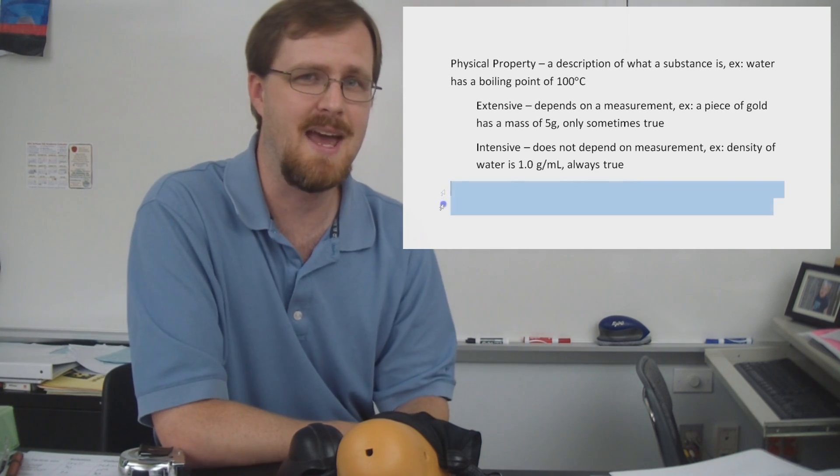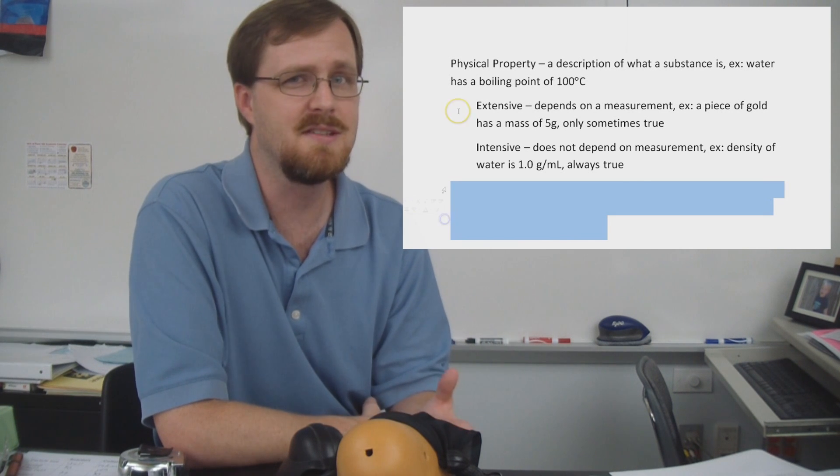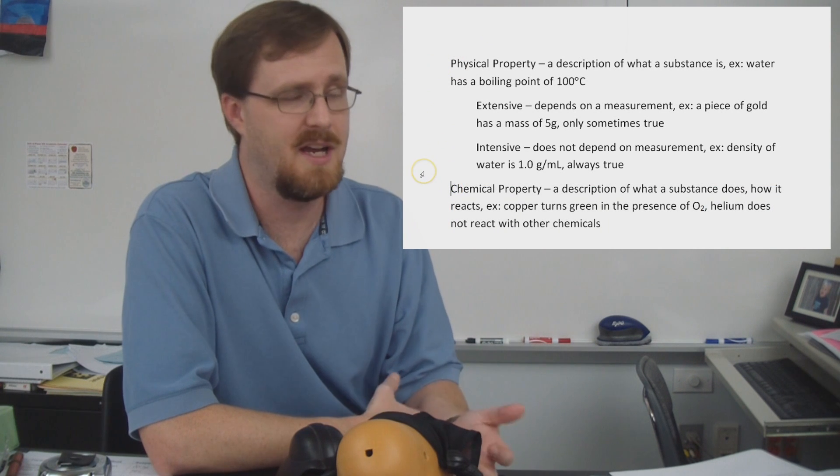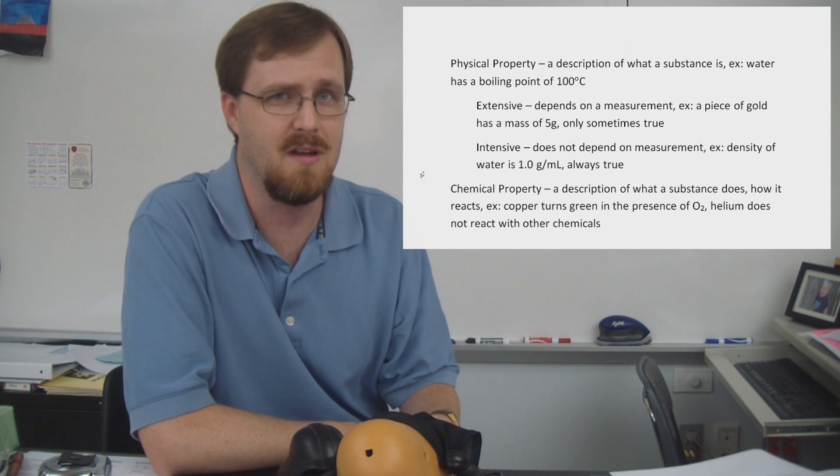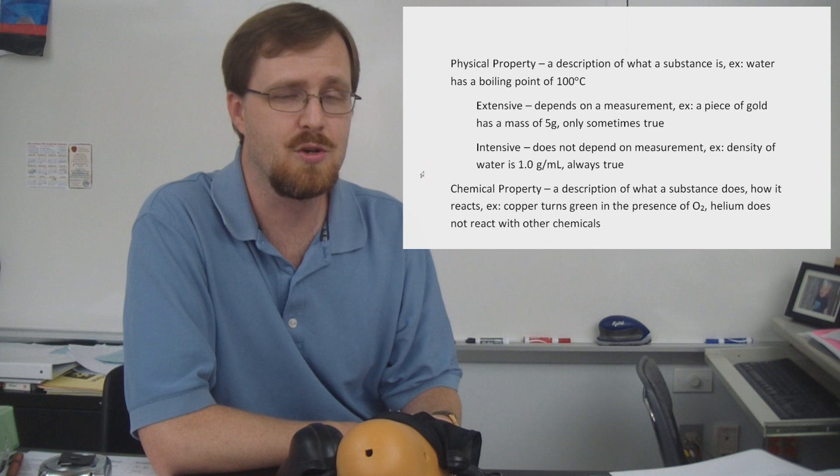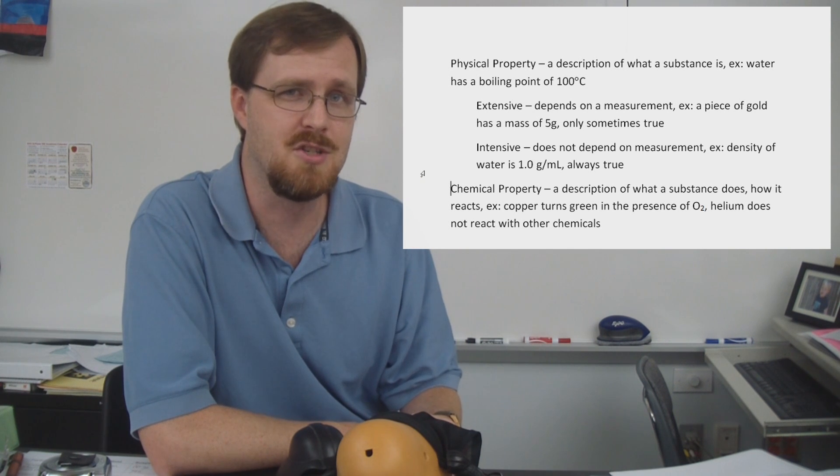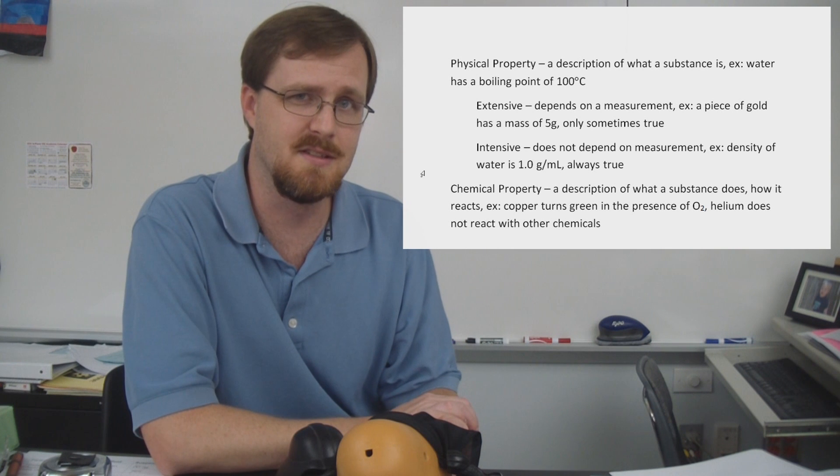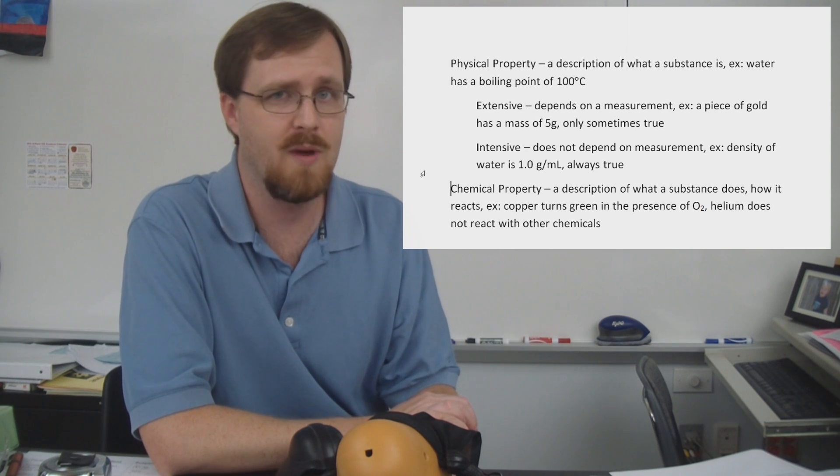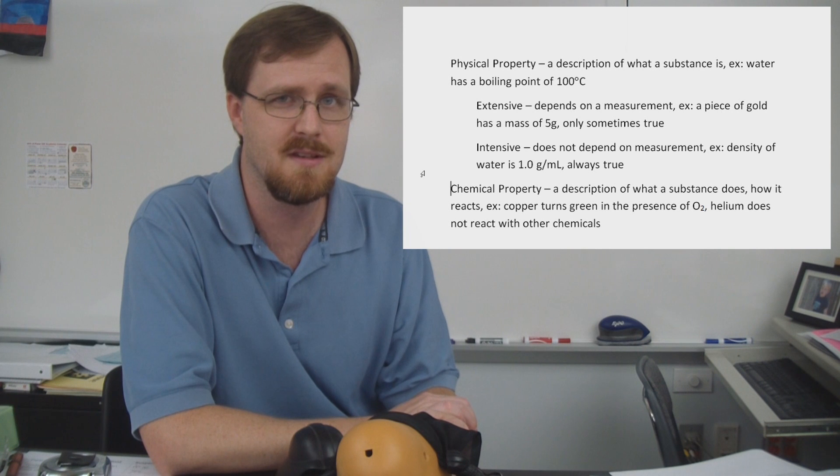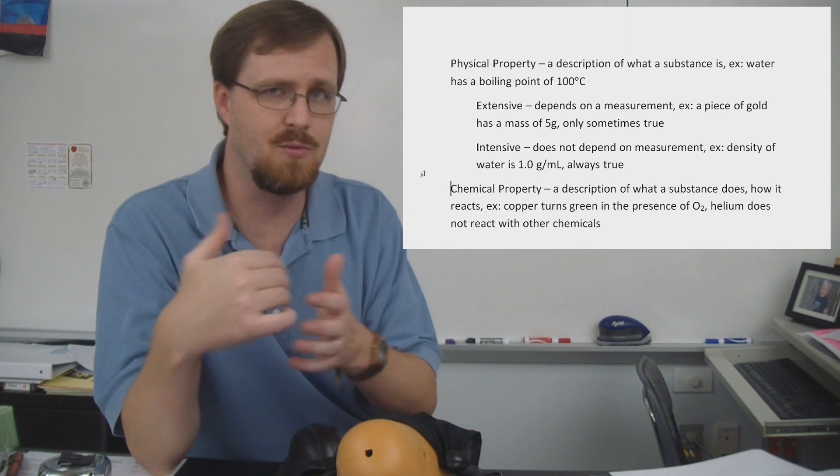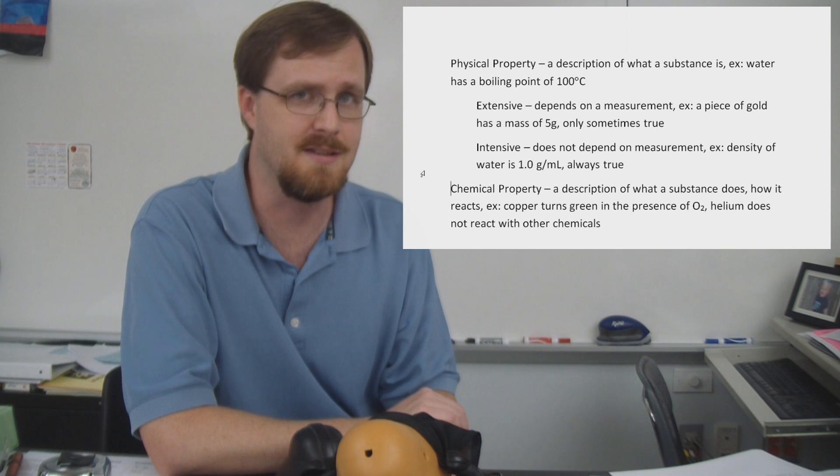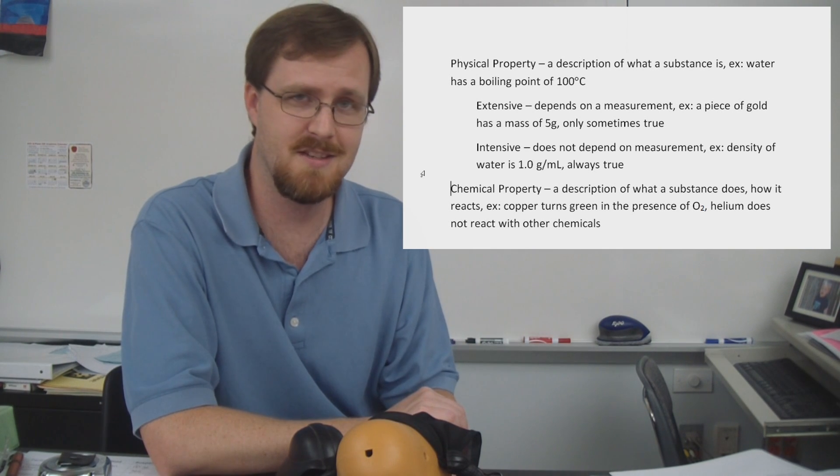The next one on the list is a chemical property. Now this is a description of what a substance does. For example, as we have seen with the Statue of Liberty, copper will actually turn green in the presence of oxygen. I could also say that there are certain gases, like the noble gases, that just don't react with other substances. So the fact that it doesn't react is still a description of what it does. Because what it does is not react. Make sense?